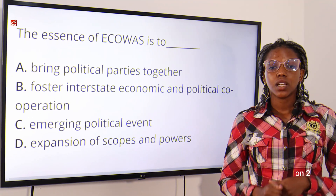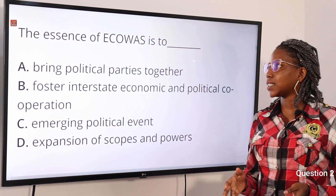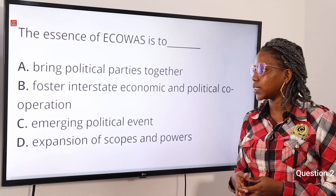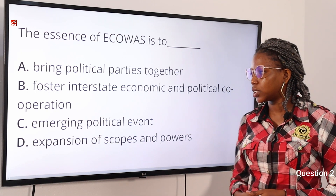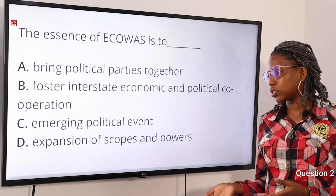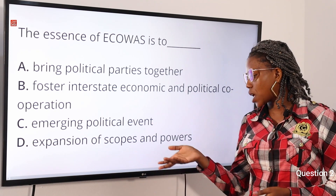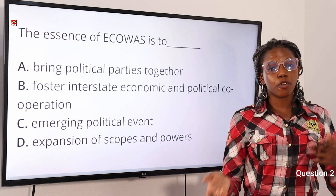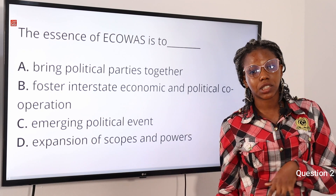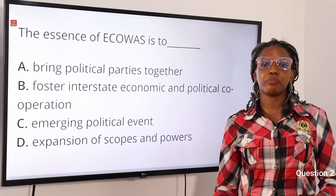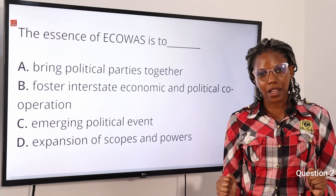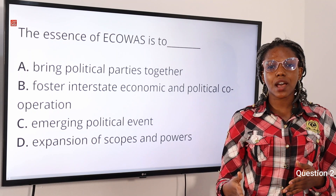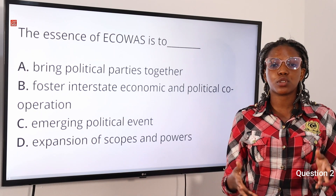Question two: the essence of ECOWAS is to — option A: bring political parties together, option B: foster the state economic and political cooperation, option C: manage political events, option D: expansion of scopes and powers. The answer is option B. ECOWAS, the Economic Community of West African States, was established on the 20th of May 1975. Its main purpose is to foster economic integration and political cooperation.